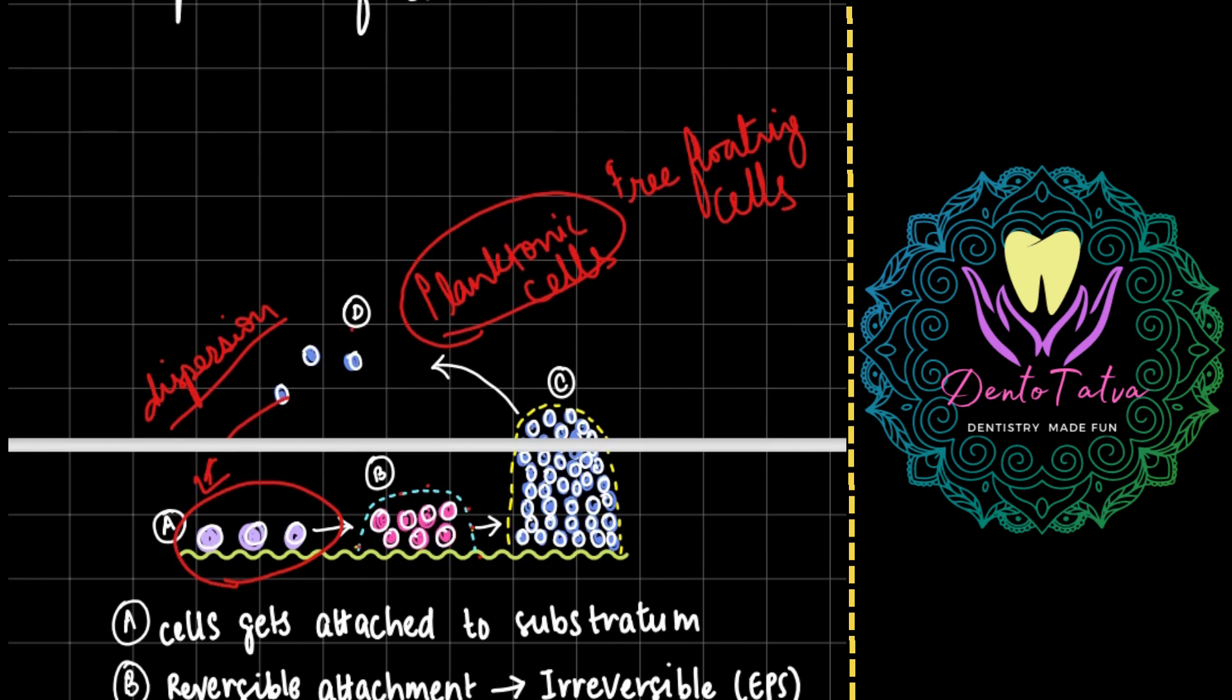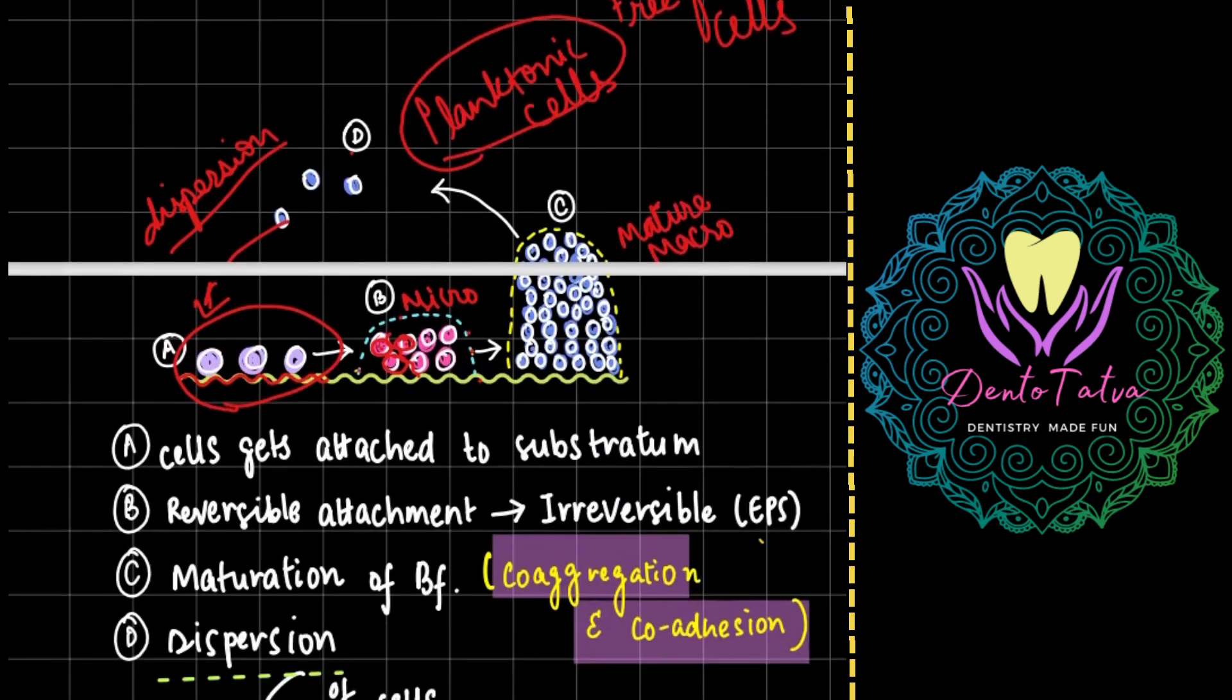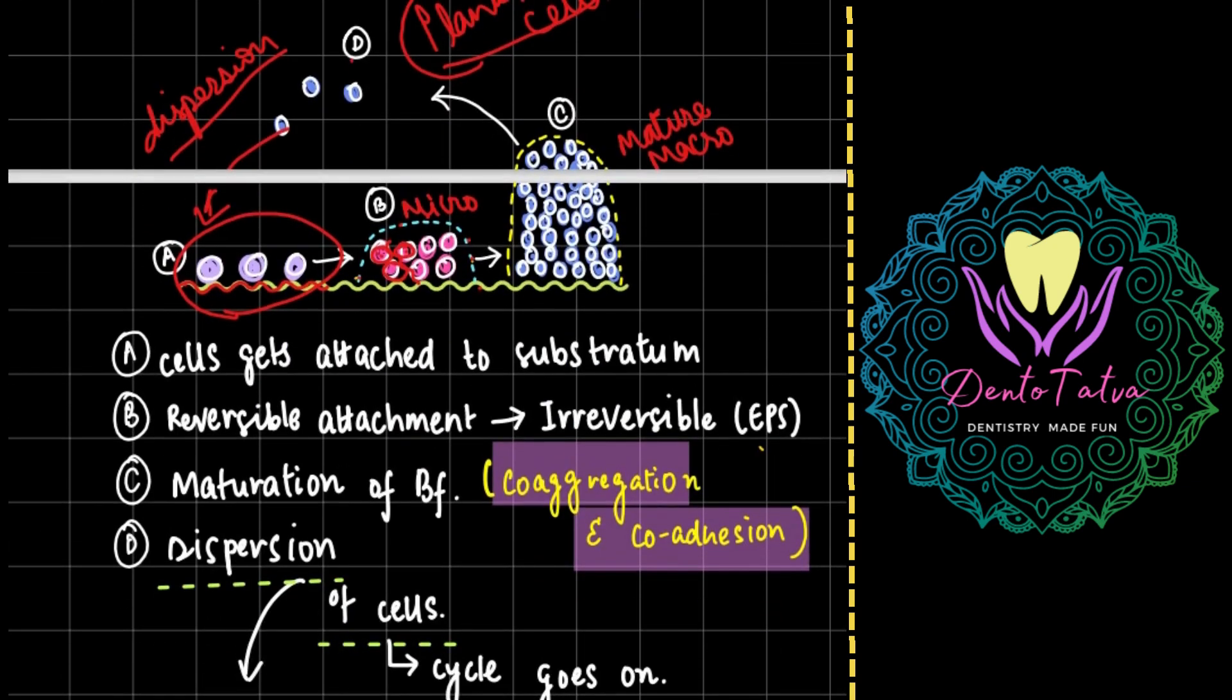So this will become the first step, followed by initial attachment to the substratum - substratum could be an interface also - and there is attachment of these cells to each other. These are the water channels, this is a microcolony which will mature at some point and form a macrocolony. So this will keep on going until there is a host defense that will break down this mature colony and do the dispersion of these cells.